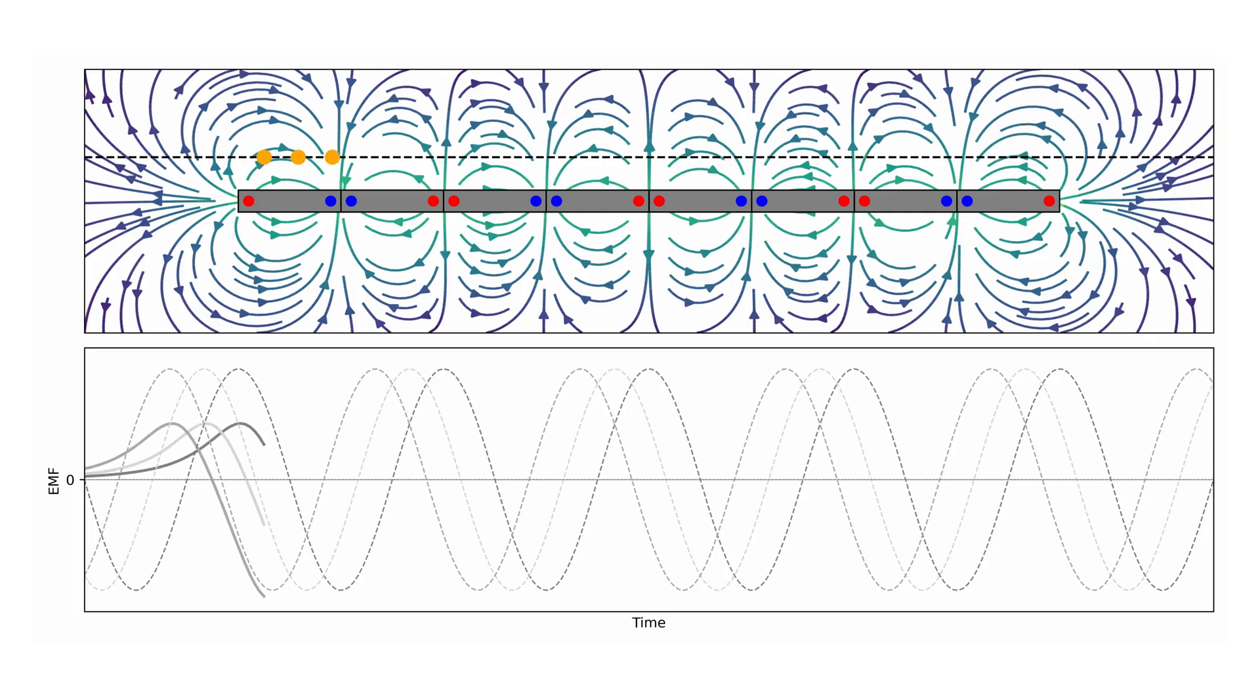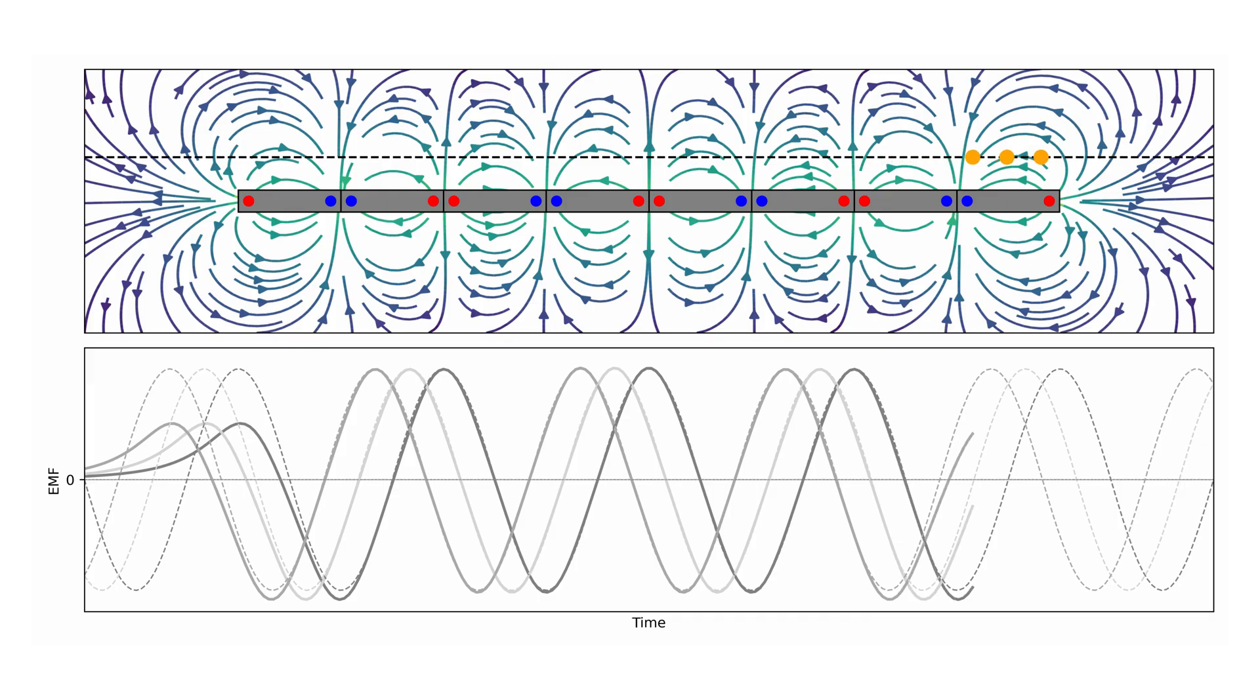When three correctly spaced conductors move through the magnetic fields, three sinusoidal waveforms with a 60 degree phase offset from each other are observed.